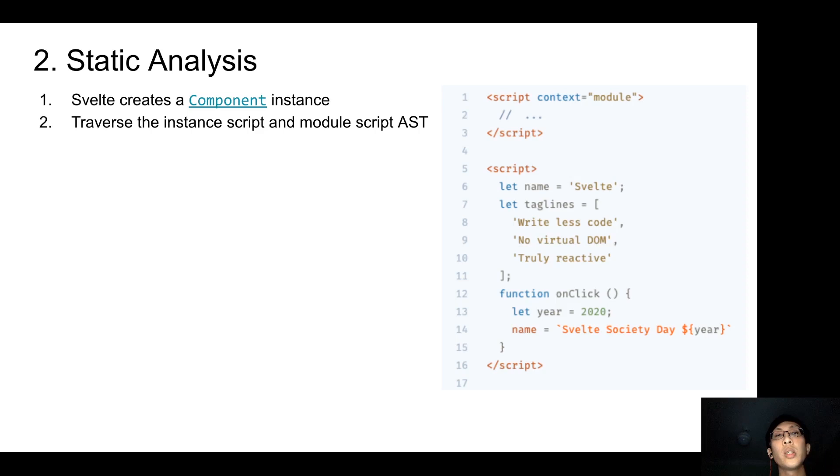So the first thing that the component does is to traverse through the instance script and module script AST. This is to find out all the variables being declared in the component, which will be useful later. So in this example, name, taglines and onclick were discovered. Also, Svelte will find out which variables get updated or reassigned in the script. In this example, it noticed that name was reassigned to Svelte Society Day 2020.